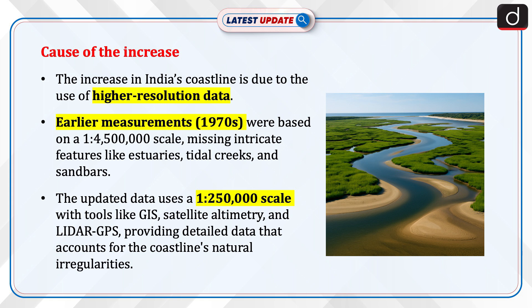The new measurements used more refined data with a 1:250,000 scale and utilized modern tools like geographic information systems (GIS), satellite altimetry and lidar GPS to map the coastline. These tools provide much more detailed data, accounting for the coastline's natural irregularities.